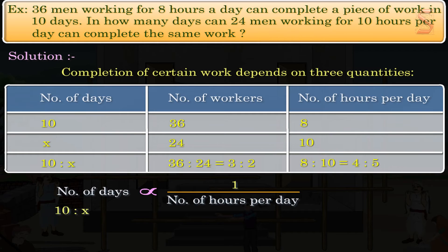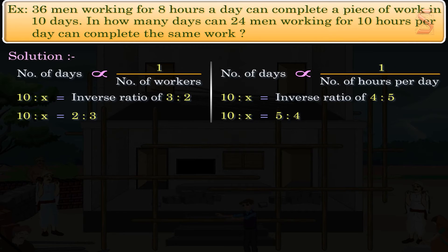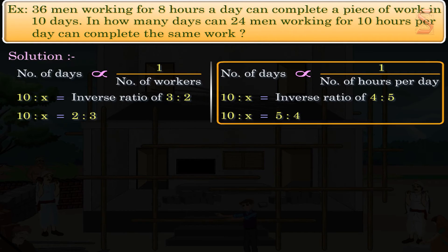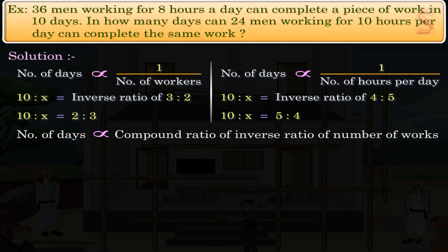So, we have 10 is to x equal to the inverse ratio of 4 is to 5, that is, 10 is to x equal to 5 is to 4. Here we see that the number of days required to complete the work is inversely proportional to two quantities: the number of workers and the number of hours per day. That is, number of days is proportional to the compound ratio of the inverse ratio of number of workers and number of hours per day.